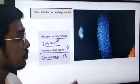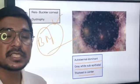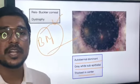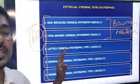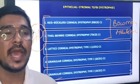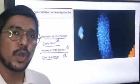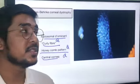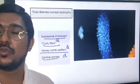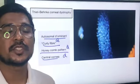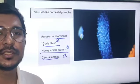In the next SIP we will discuss stromal dystrophies — lattice corneal dystrophy, granular, and macular stromal dystrophy. Do watch all the SIPs in this series for great and fun learning, and you will be able to solve MCQs in a very short time. Just take the sip and watch. Thank you.